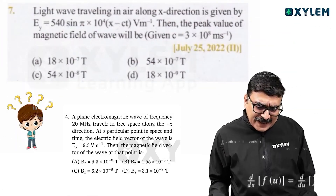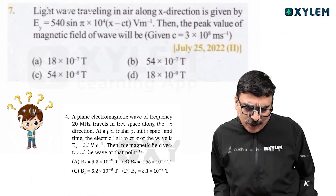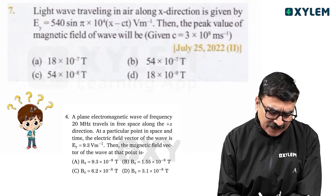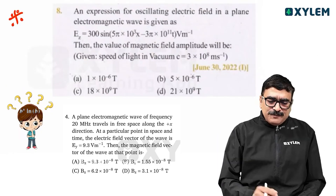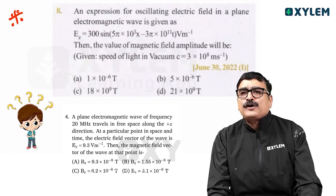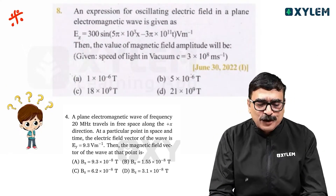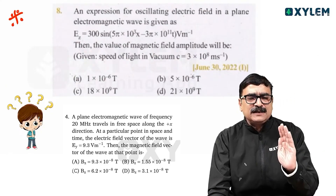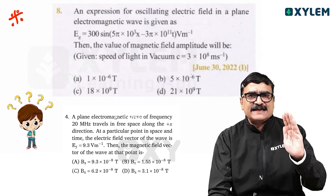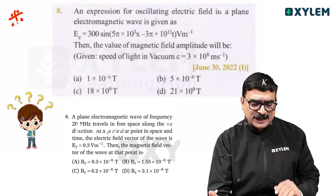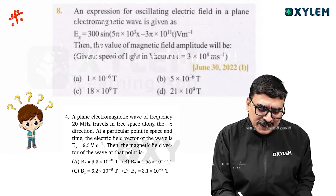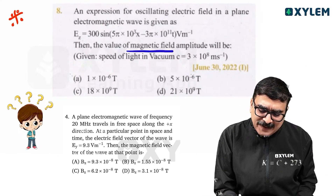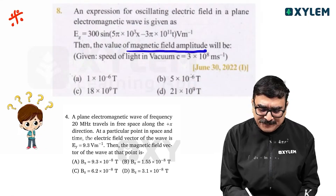Light wave traveling in the air around the x-direction. This is an electromagnetic wave. The magnetic field is the amplitude.